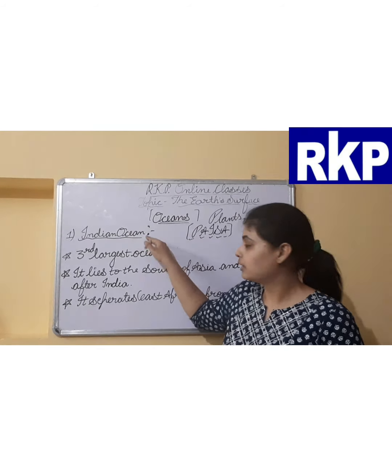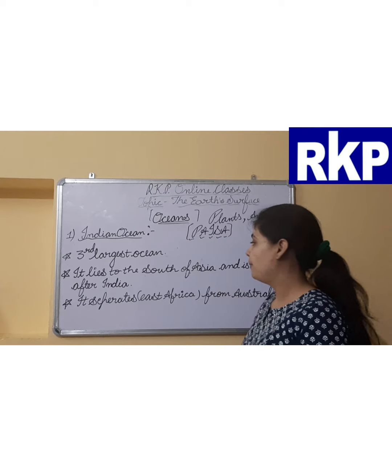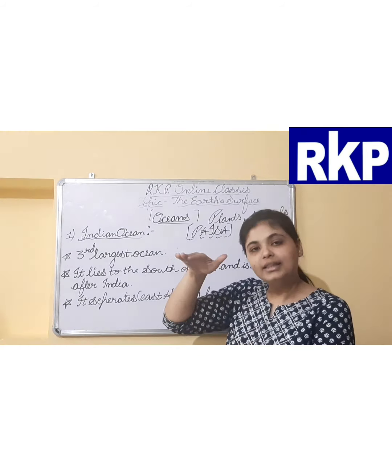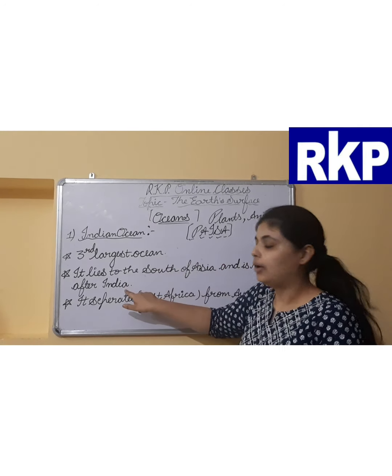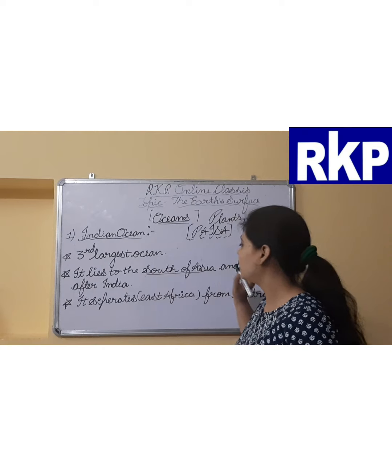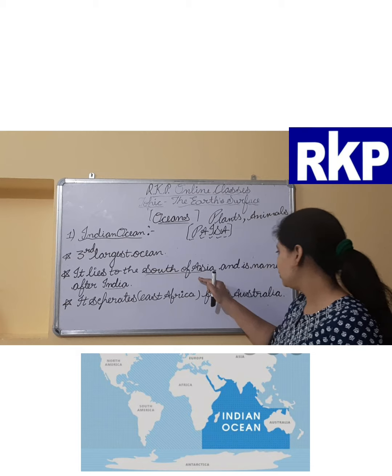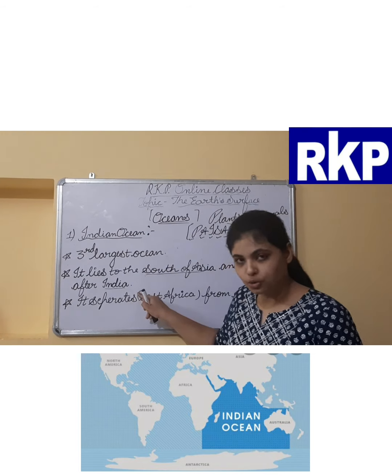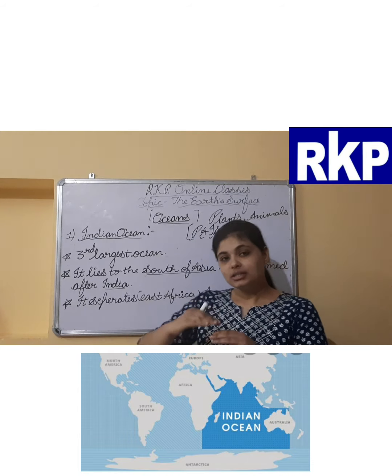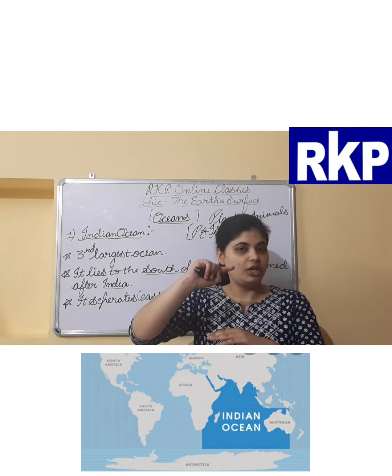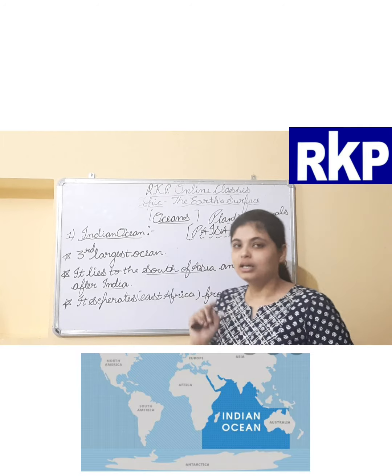There is also a mountain range on the floor of the Atlantic Ocean. A mountain range means a series or group of mountains. In the Atlantic Ocean there is a mountain range present on the ocean floor, and that is the Mid-Atlantic Ridge.